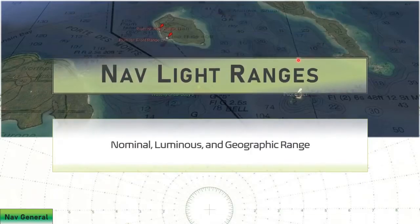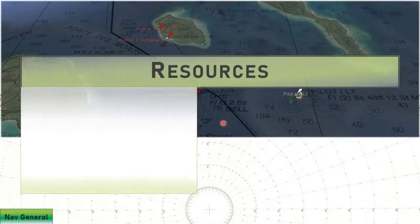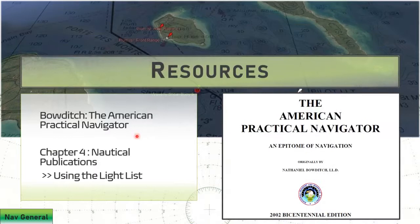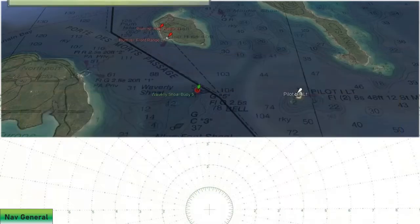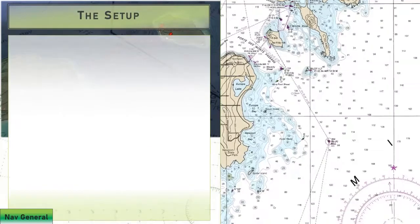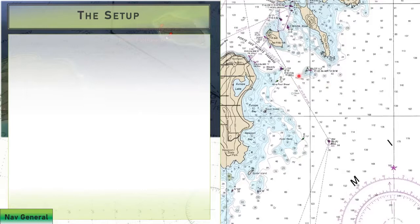Welcome to Oceans Unlimited. We're going to be taking a look at some theory on navigational light ranges. This is nav general stuff that's going to come in handy when we're dealing with navigational lights and basic principles behind them. Resources for this video come from the American Practical Navigator, Bowditch, chapter four, and we're going to be looking at using the light list data.